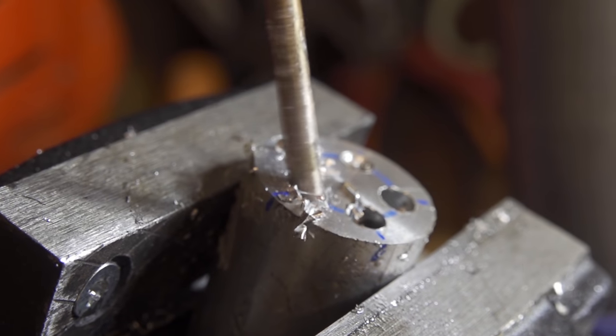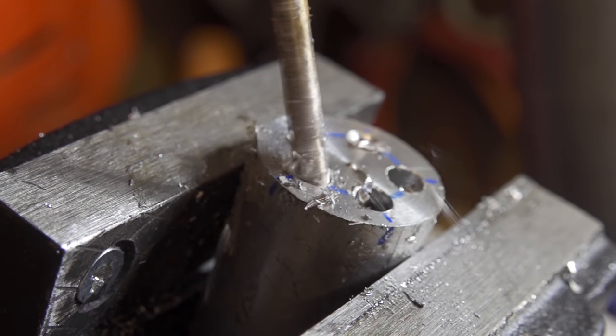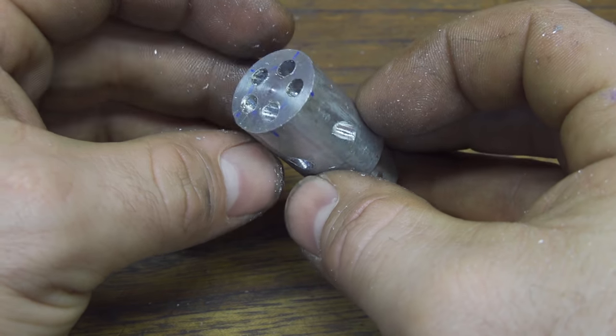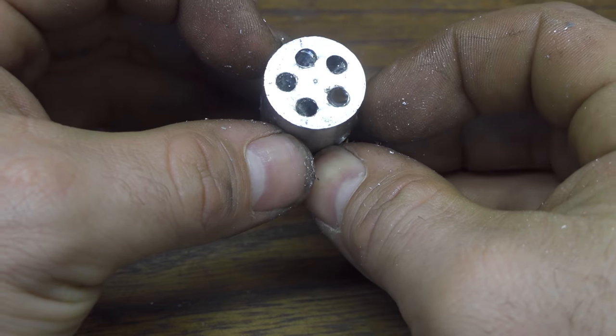And I can go this time all the way through the aluminum part. Go slowly because we want to have the holes as precise as possible.